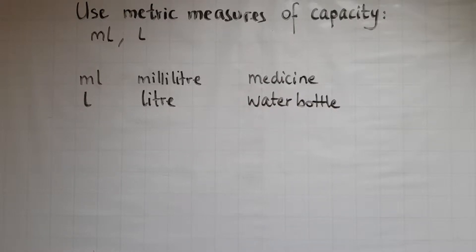In this video we'll learn to use metric measures of capacity: milliliters and liters. As we said before, metric measures are different from the other measures like imperial, an example of which is ounces.